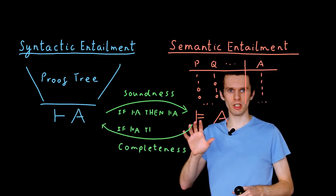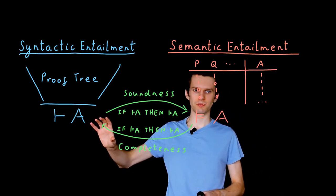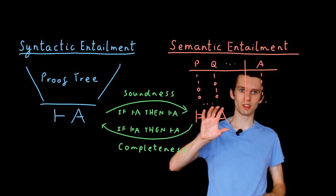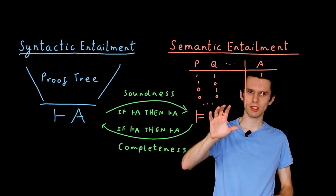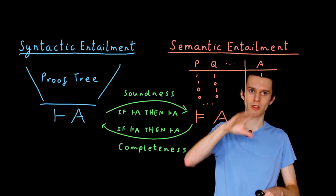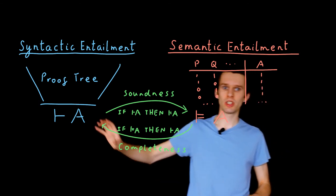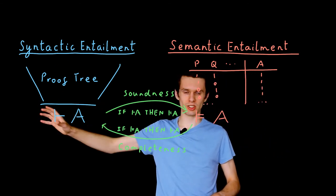The converse property is known as completeness. And this means that if something is true in the semantics, if we have a proposition that is true in real life, then we can show it is true using the syntax.